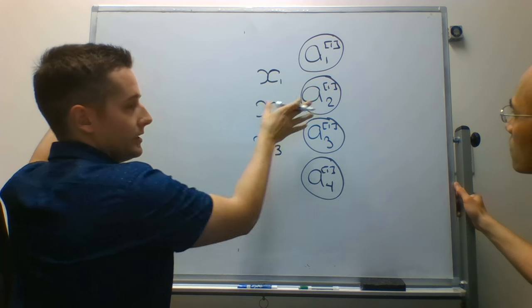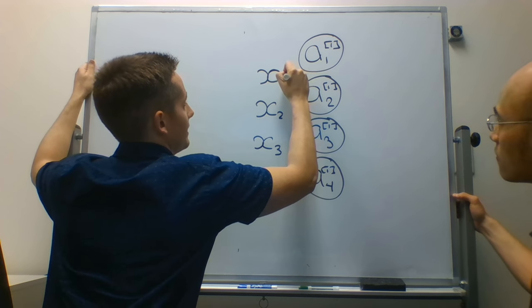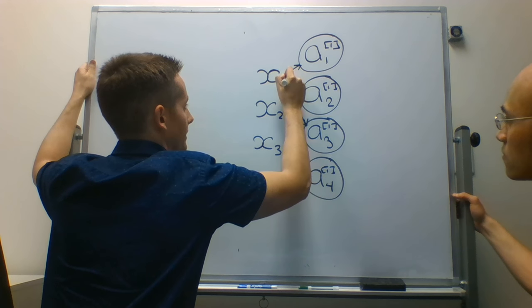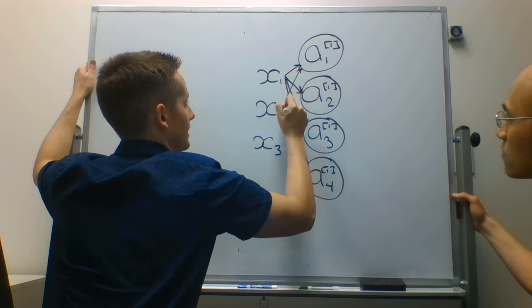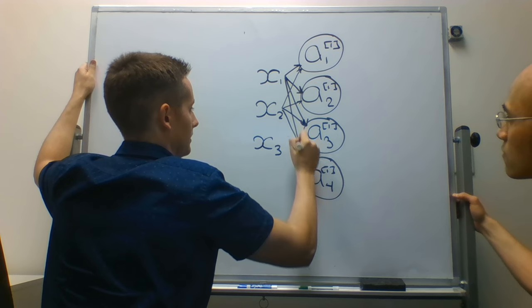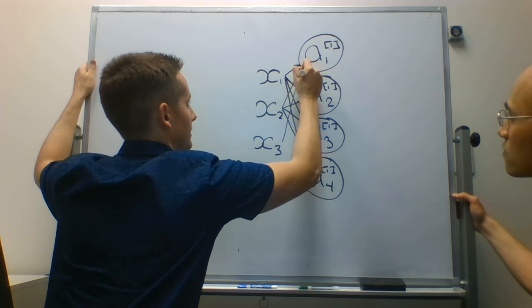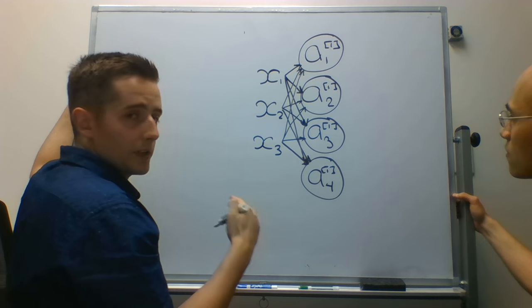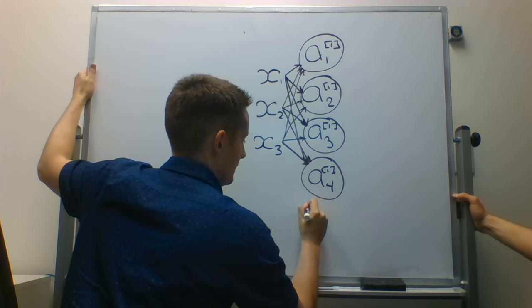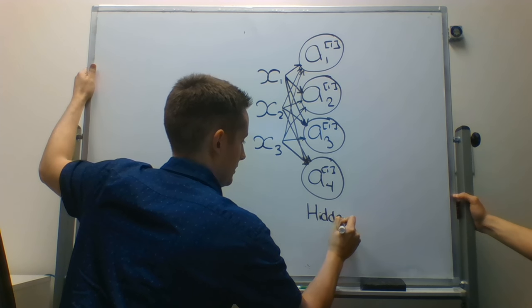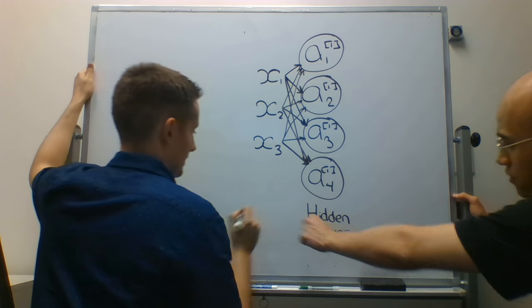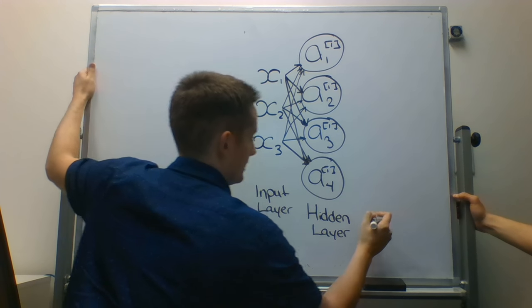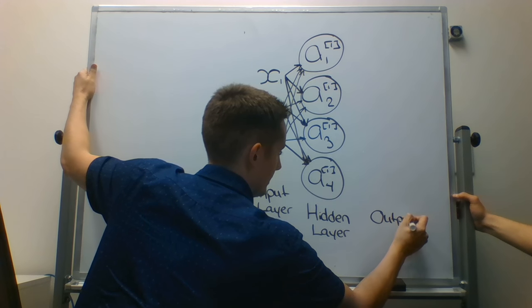For each neuron that we have, we are going to pass in every single input. So, x1 is going to be connected to every single individual neuron. x2 is going to be connected to every single neuron. And x3, again, connected to all the neurons. So, these lines start to overlap and look a little funny, but I think that you understand the idea here. And then we're going to have one output layer. So, let's write hidden layer. And this is the input layer. This is the input layer, yes.